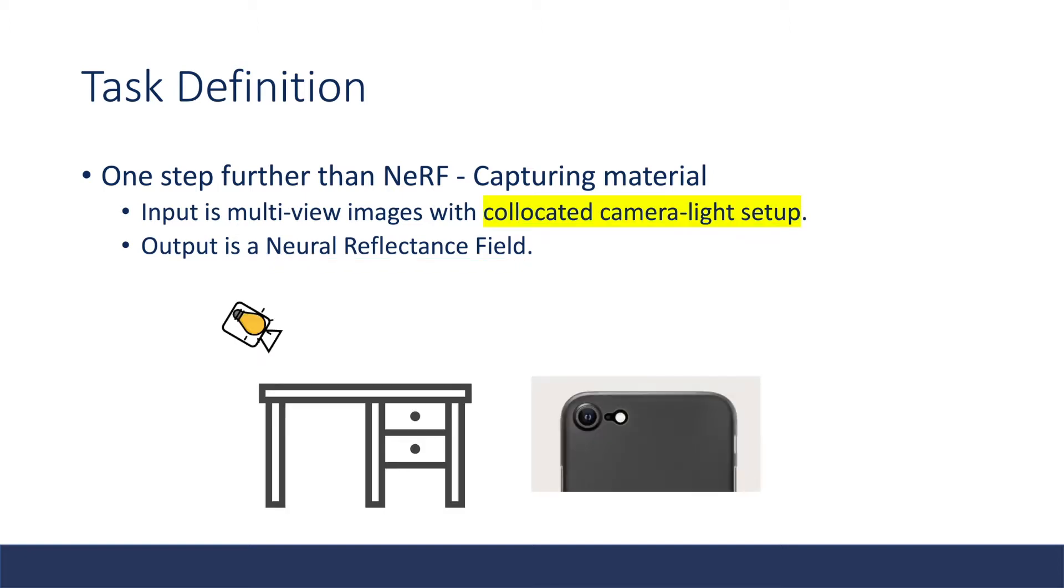Let's start with the capture condition. It is a co-located camera light setup. It basically means that if I want to capture an object on the desk, I place a camera here. The assumption for lighting is the only light source is a point light and this point light is located at the camera center.